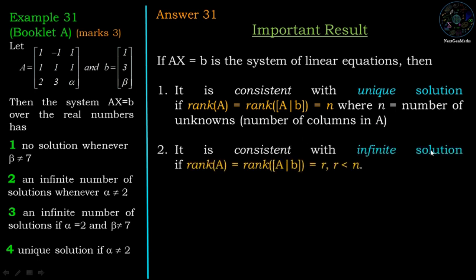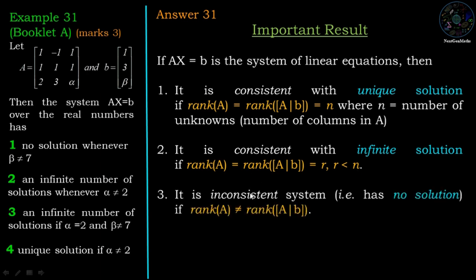The system is consistent with infinitely many solutions if rank of A equals rank of augmented matrix [A|B] equals r, where r is less than n. It is inconsistent, meaning no solution, if rank of A does not equal rank of augmented matrix [A|B]. So unique solution, infinitely many solutions, and no solution all depend on the ranks of A and [A|B].